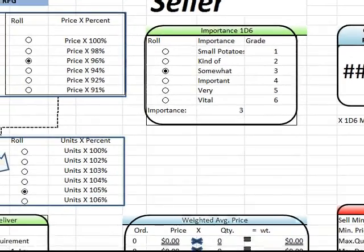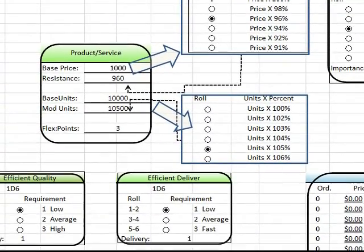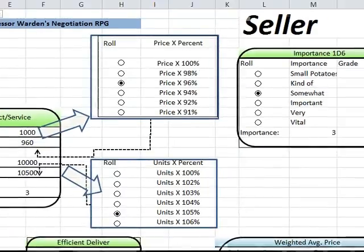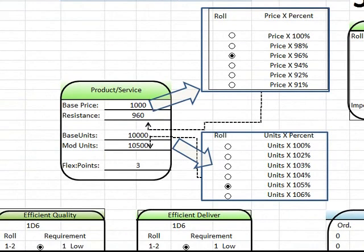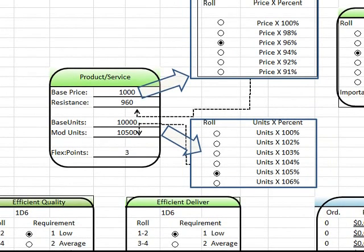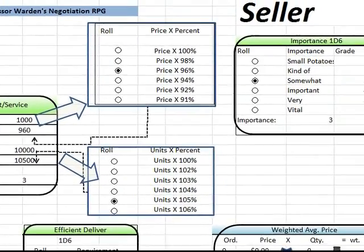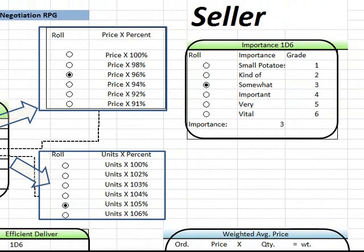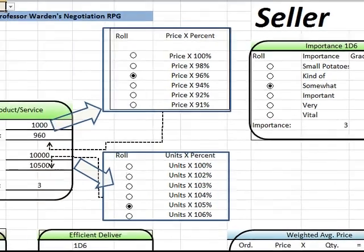Just to review what we've done so far: we started with a base price and changed it to a resistance price; we started with base units and changed that to mod units. The resistance price means, as the seller, I cannot sell for less than that — I must sell for more. Mod units is how many I'm going to produce and sell; my boss told me so, and if I sell less, I'm not successful. My flex points give me flexibility — more flex points is better. I've also decided the importance: if it's vital like five or six, not succeeding could mean I get fired.